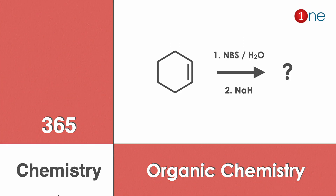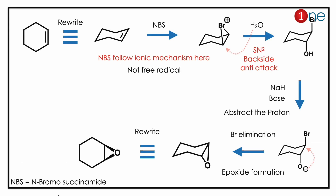The problem: on the blind side, cyclohexene can be drawn as a chair form — it is a stable form. Then you are using N-bromosuccinimide (NBS). It will act via an ionic mechanism, so bromonium ion formation occurs with a bridged bromine.